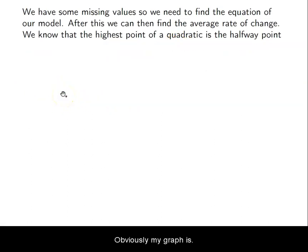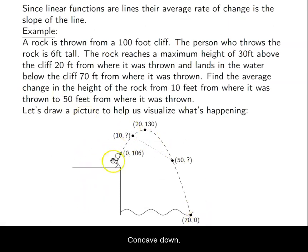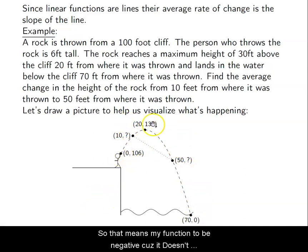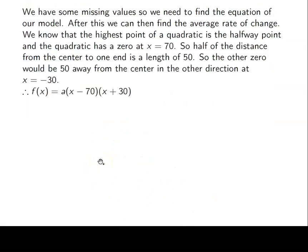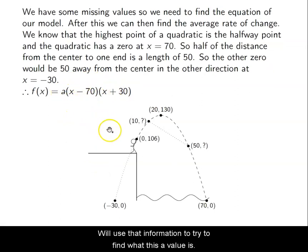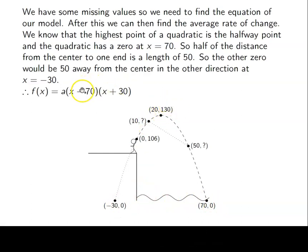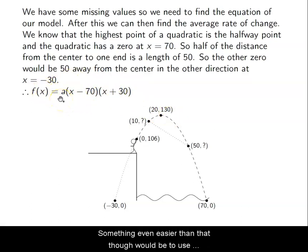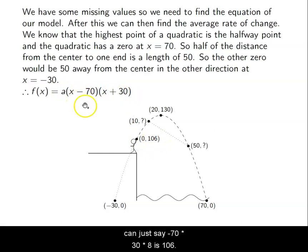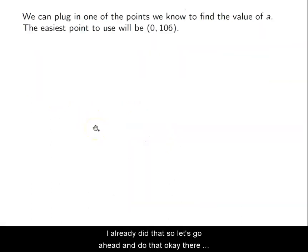My graph is concave down, so my function should be negative — it's a sad face not a smiley face. I'll use a known point to find the value of a. I can use my zero value — x equals 0, f of 0 equals 106. So plugging in: a times (0 minus 70) times (0 plus 30) equals 106. That gives a times negative 2,100 equals 106, and 30 times negative 70 is negative 2,100.